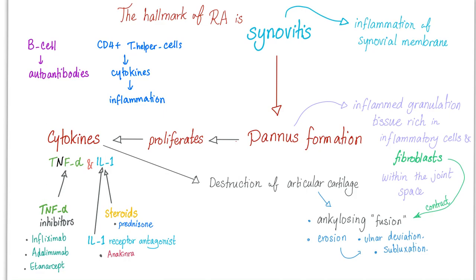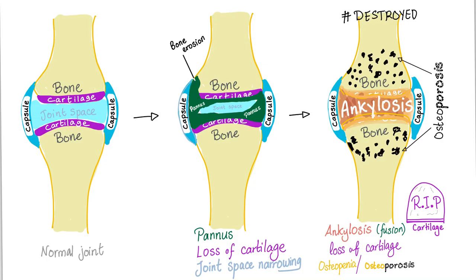The hallmark of rheumatoid is synovitis and pannus formation. The pannus is very destructive, and cytokines are also key. As shown, the green pannus is destroying everything — the cartilage, the bone, everything. There is loss of cartilage and joint space narrowing.